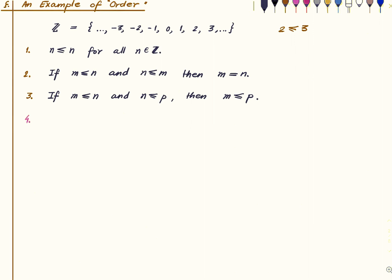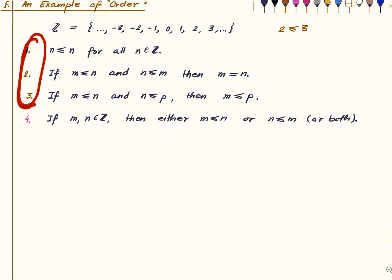The fourth property is: if m and n are integers, then either m ≤ n or n ≤ m — or both, which happens if and only if m and n are equal. So these four properties hold, and in the notion of a PoSet we will be retaining the first three properties and relinquishing the last one.